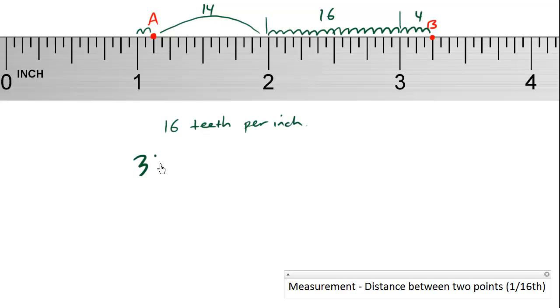So there's a total of 34 teeth. Each tooth is 1/16th of an inch, because it takes 16 teeth to make one inch.